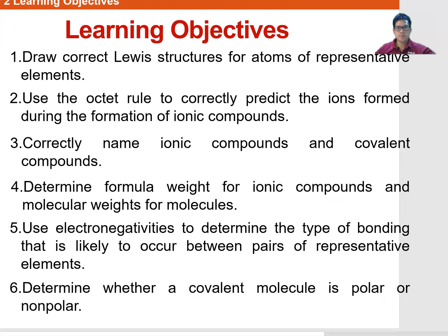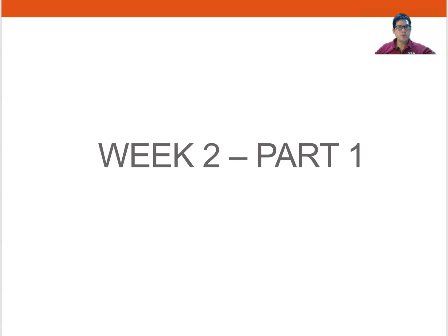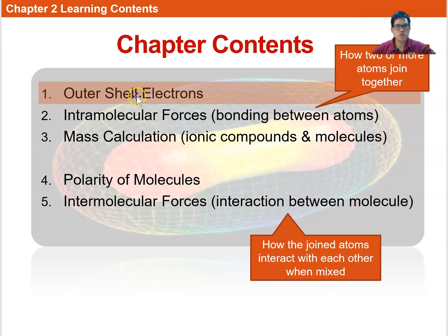For Chapter 2, I have divided it into two parts. For Part 1, you'll be learning three things: outer shell electrons — what it means by outer shell — then what we call intramolecular forces, which is bonding between atoms, and then some mass calculations. We've done mass calculation for atoms in the previous chapter, but now you'll have slightly more complicated calculations involving a group of elements joined together, either ionically or covalently bonded.